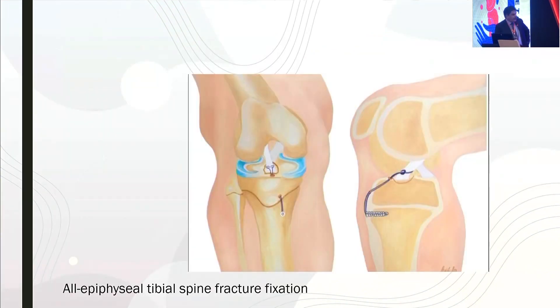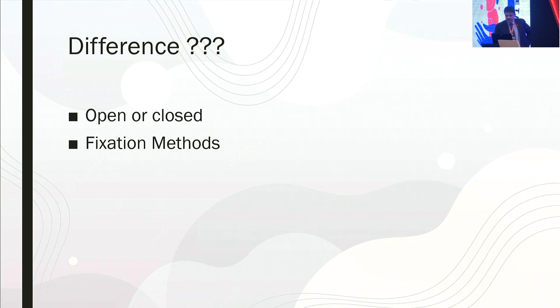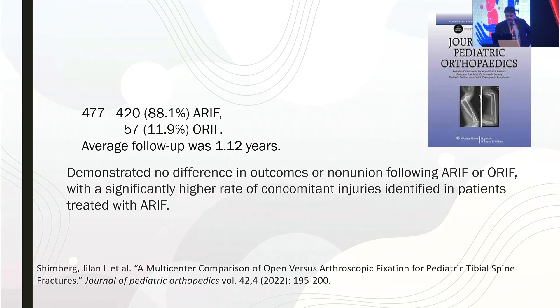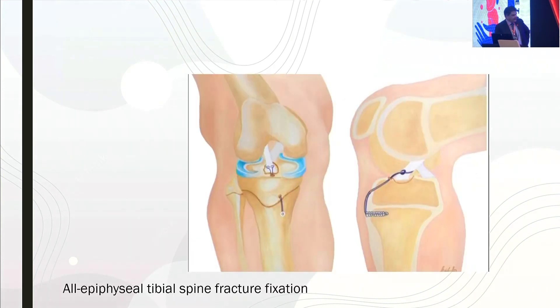We are also hearing about an all-epiphyseal tibial spine fracture technique, in which the suture is passed through the physis without crossing the growth plate, and then fixed near the tibial tuberosity with an anchor suture.